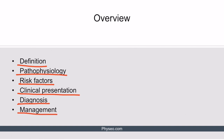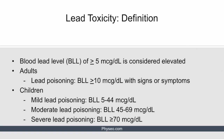Lead is a heavy metal that has no physiological role inside the body. Though no amount of lead in the body is safe, clinicians consider a blood level of greater than or equal to 5 micrograms per deciliter as elevated. In adults, lead poisoning is diagnosed if a blood lead level is greater than or equal to 10 micrograms per deciliter, accompanied by known signs or symptoms of lead poisoning.